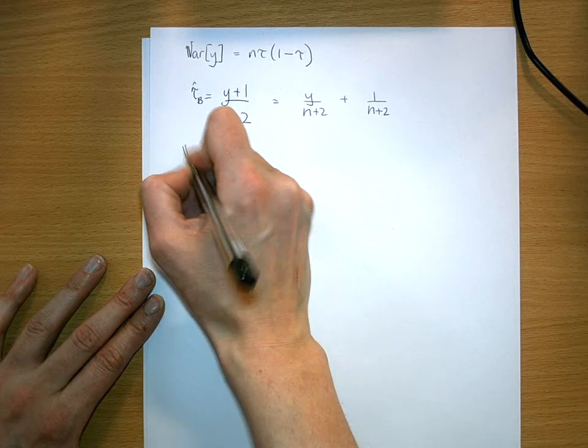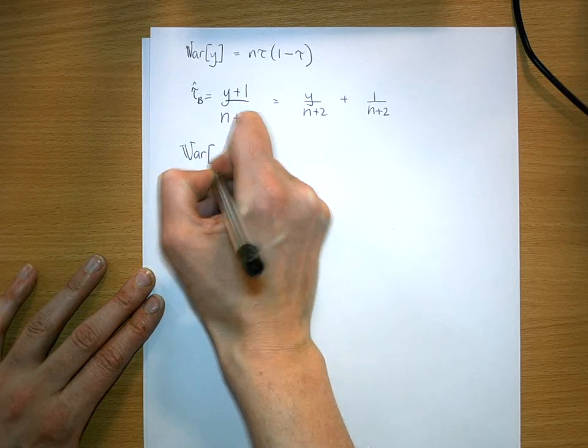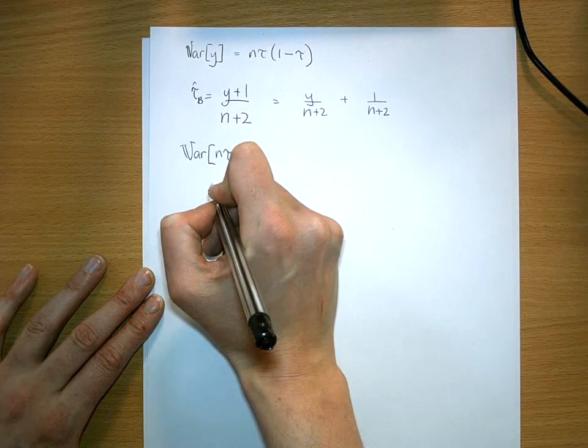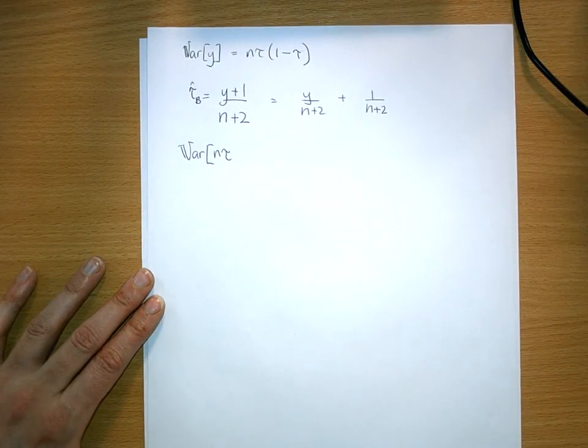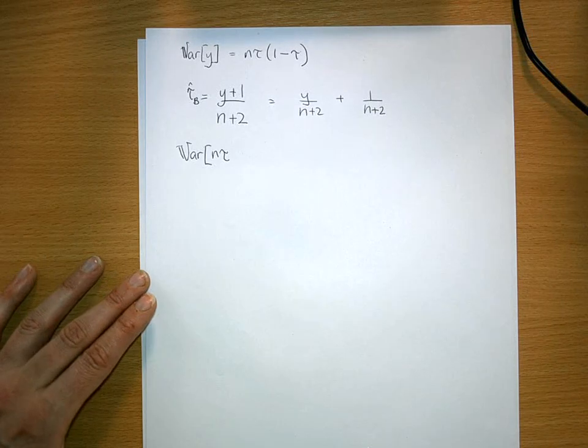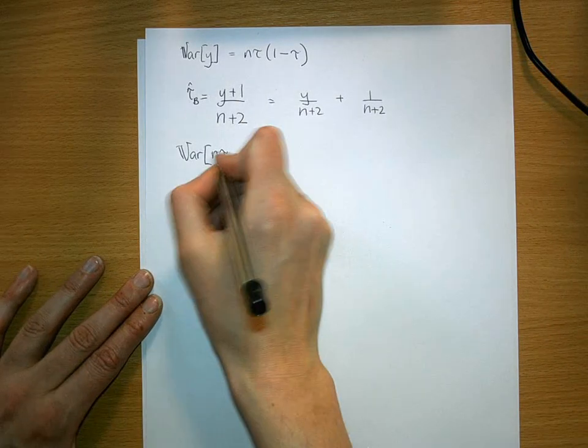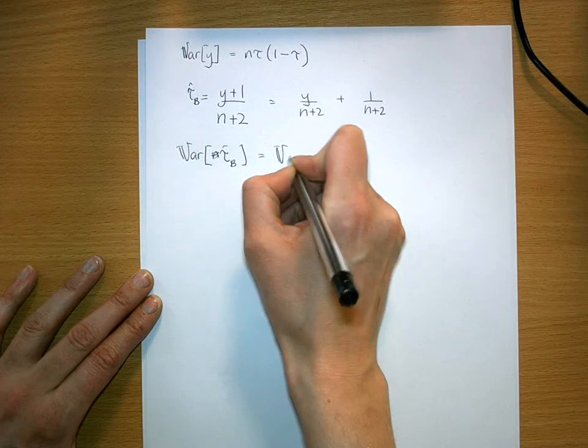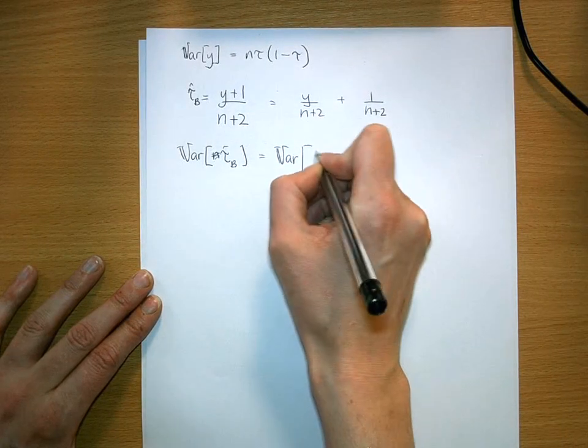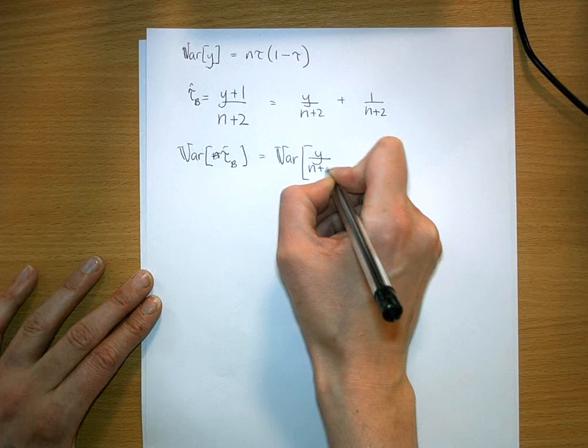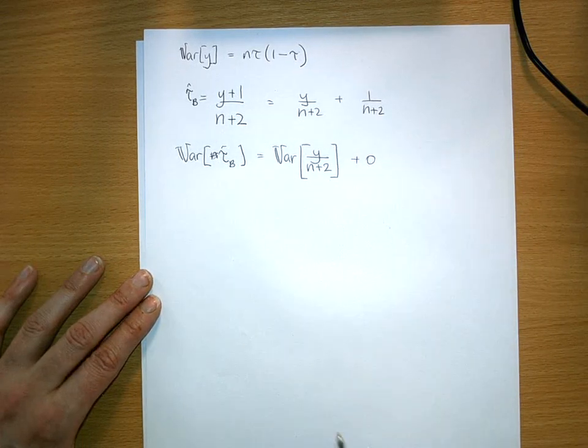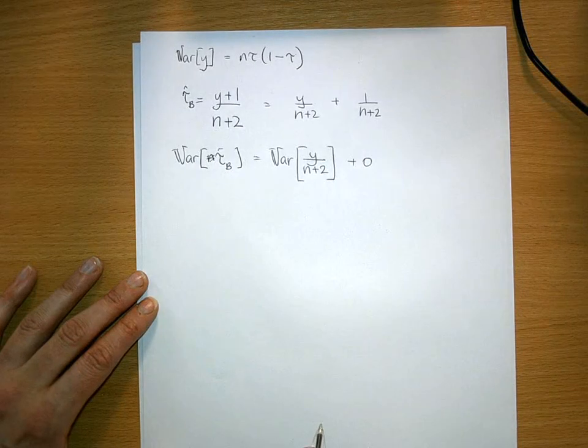So the variance of tau_b is the variance of y/(n+2) plus 0.